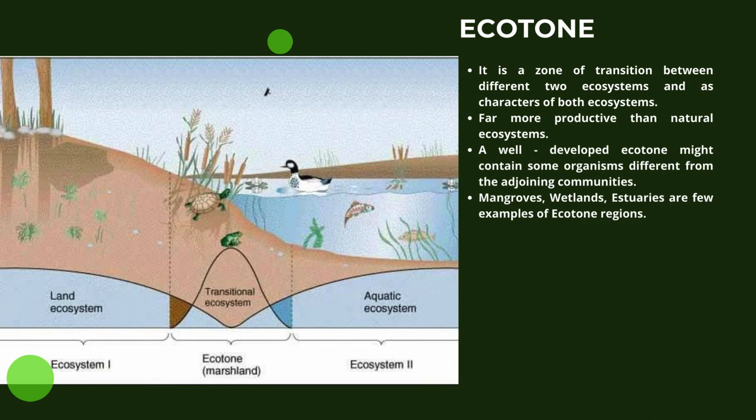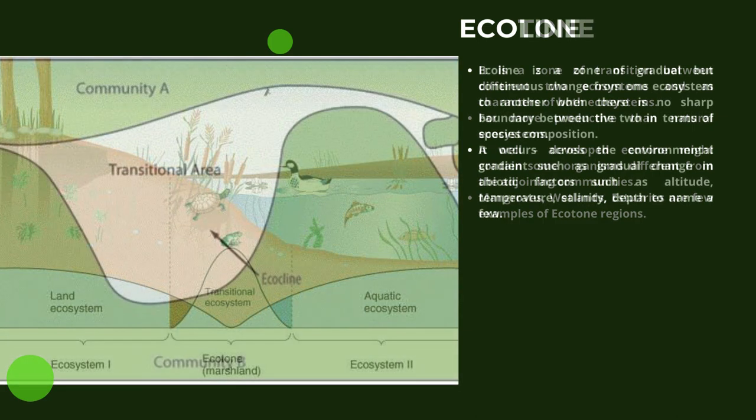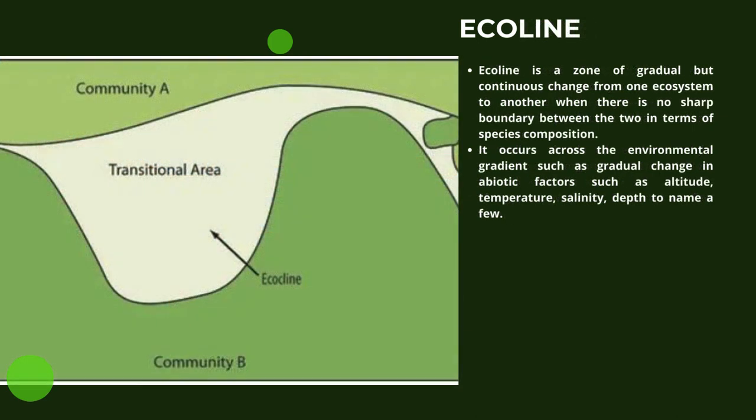Let us look at ecotone. It is a zone of transition between two different ecosystems and has characteristics of both ecosystems. It is far more productive than natural ecosystems. A well-developed ecotone might contain some organisms different from the adjoining communities. Mangroves, wetlands, and estuaries are a few examples of ecotone regions.